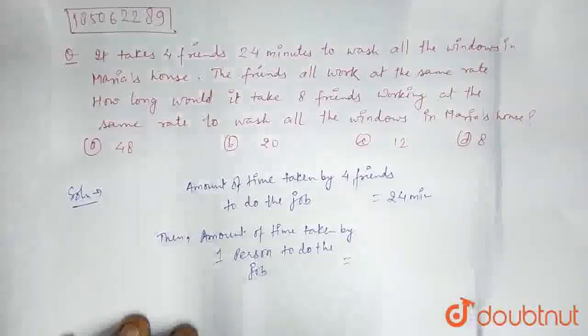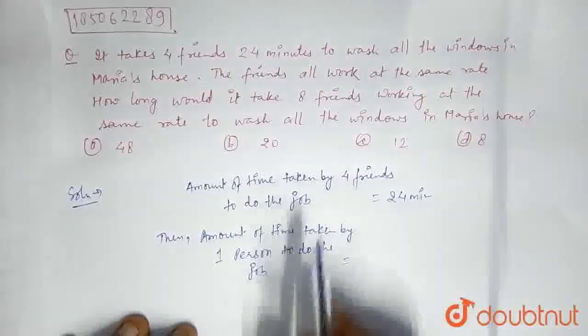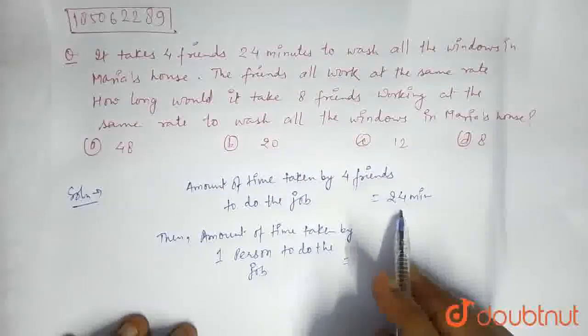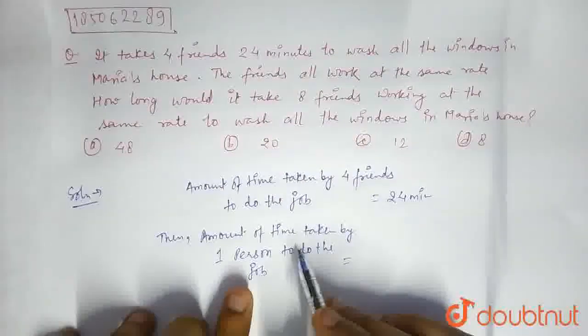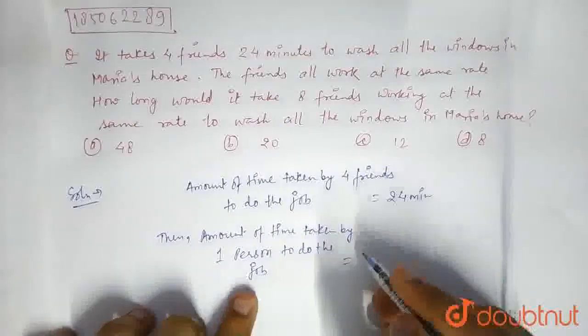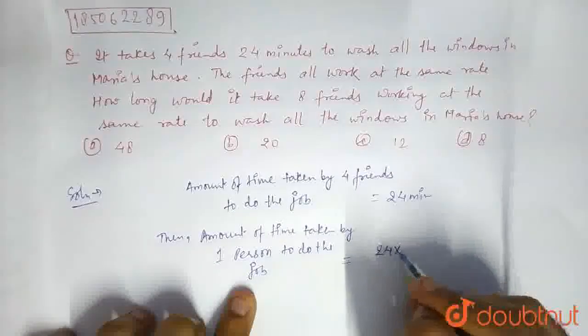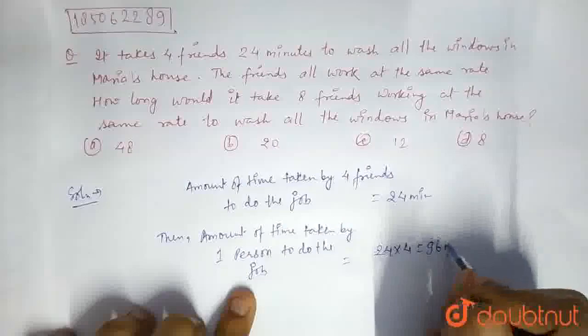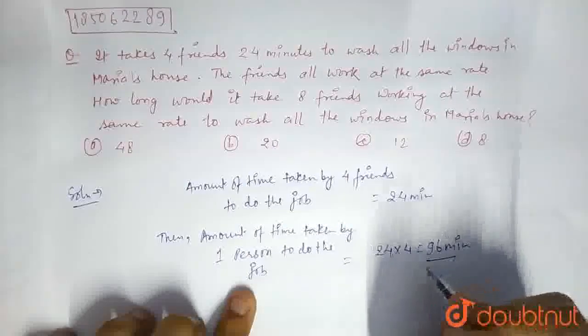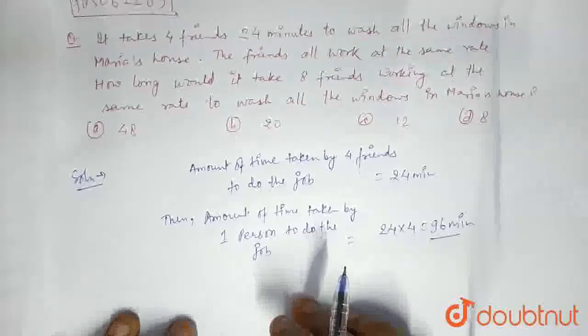Now, it's a logical thing that if 4 friends are taking 24 minutes to complete the job, then the amount of time that 1 person will take to do the job would be 24 times 4, that is 96 minutes. So a person will take 96 minutes to complete the job.